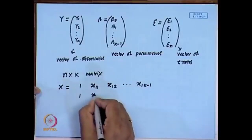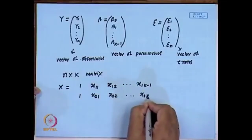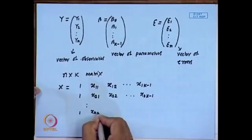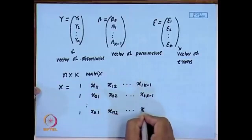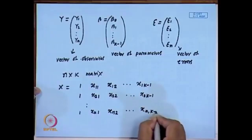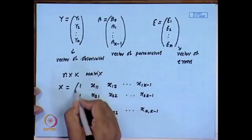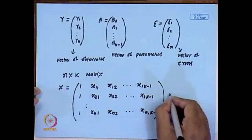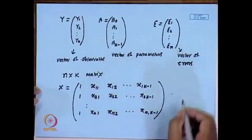The second row of X is [1, x_{21}, x_{22}, ..., x_{2,k-1}] and the nth row is [1, x_{n1}, x_{n2}, ..., x_{n,k-1}]. This is a matrix of known form because all the values are known. We have the data of the form (y_i, x_{i1}, x_{i2}, ..., x_{i,k-1}) for i = 1 to n.